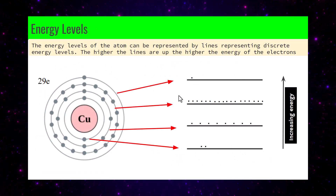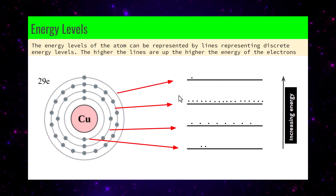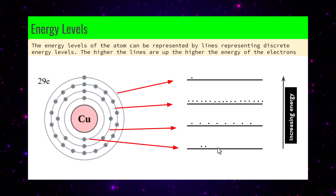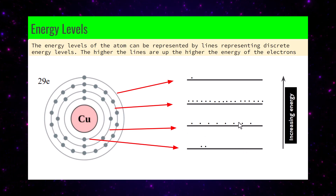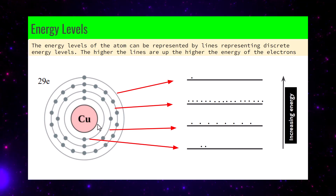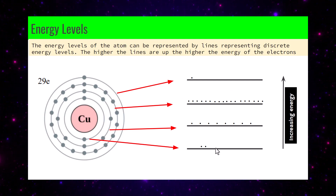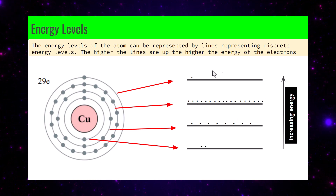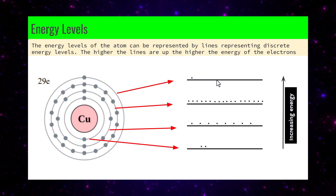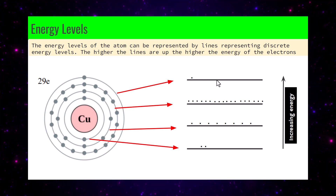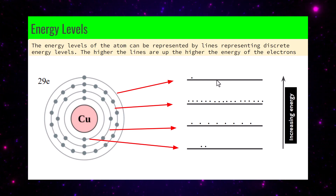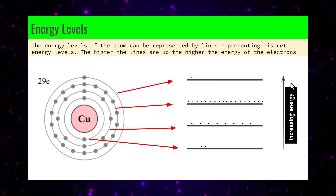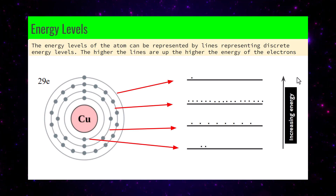Rather than drawing shells in circular form, we can transform them into energy level diagrams. Each line represents an energy level — the higher up, the bigger the energy. The first shell has 2 electrons, full; the second has 8, full; the third is full too. The top shell has only one electron but can hold 32, so there's plenty of free space — copper is a very good conductor.